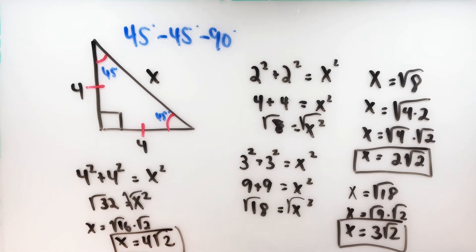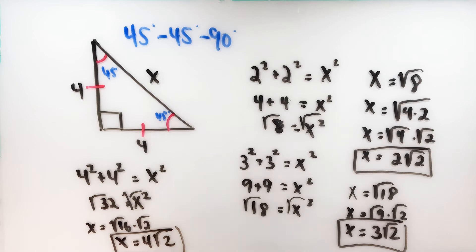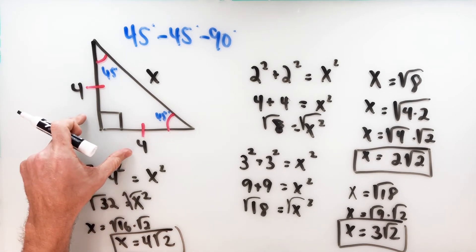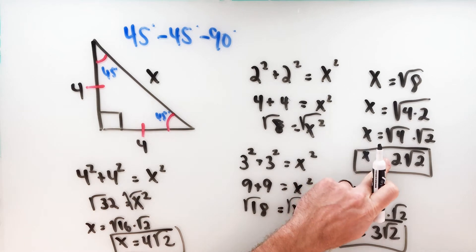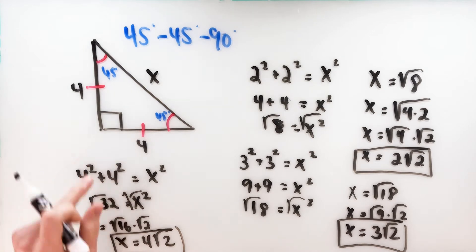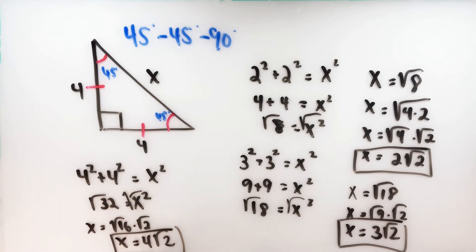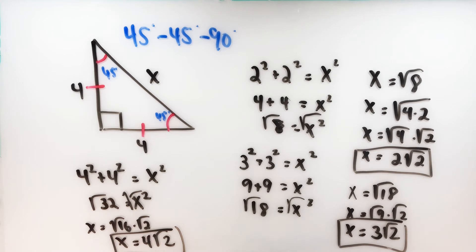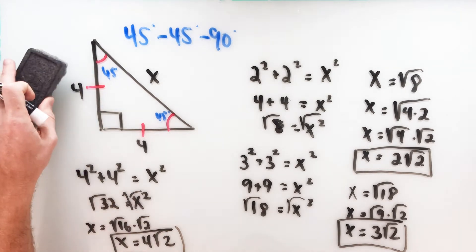So if you haven't seen the pattern by now, here it is: when the leg was two, the hypotenuse was two root two. When the leg was three, the hypotenuse was three root two. When the leg is four, the hypotenuse is four root two. The length of the leg shows up in front, and at the end we always get root two. The pattern is that the length of the hypotenuse always seems to be the length of the leg times the square root of two, and that holds true throughout.